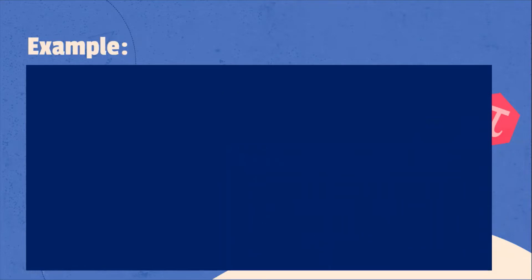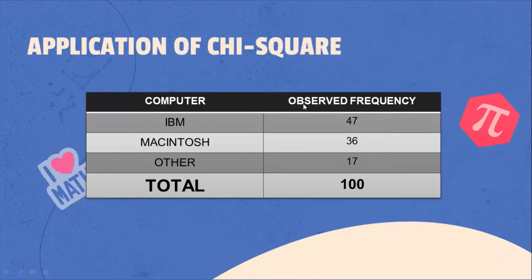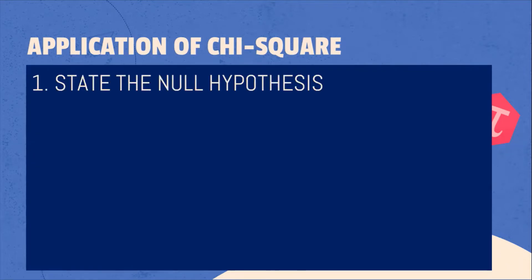Let's now try to apply chi-square on this given problem: determine if there is a significant difference among the frequencies with which three brands of computers are selected. Given: 47 observed frequencies chose IBM, 36 chose Macintosh, 17 chose others, with a total of 100 respondents.